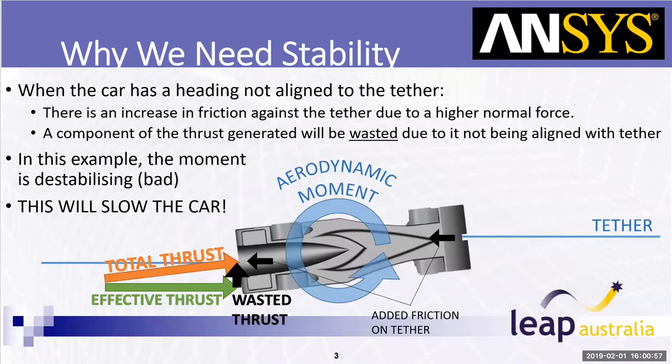This is effectively why stability is important. If our vehicle is turning away, we're creating more drag on the tether. If we're hitting the sides of the track, we're creating friction and losing effective thrust, because it's acting out of the axis of the direction we want to travel.